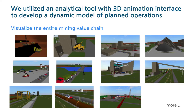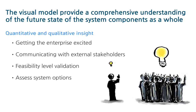An analytical model with 3D animation interface is used to develop a dynamic model of planned operations. This model visualizes the entire mining value chain, including face operations, loading of primary crusher, concentrator processing, product storage, container loading and transport, container unloading, loading onto trains both manifest and unit trains, rail yard operations, processing plant, and port operations. The model provides a holistic view of the system components as a whole and supports the understanding of the future state of the system for all stakeholders involved.